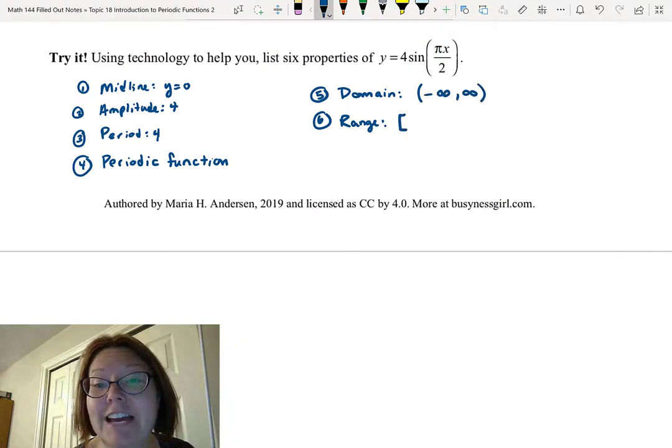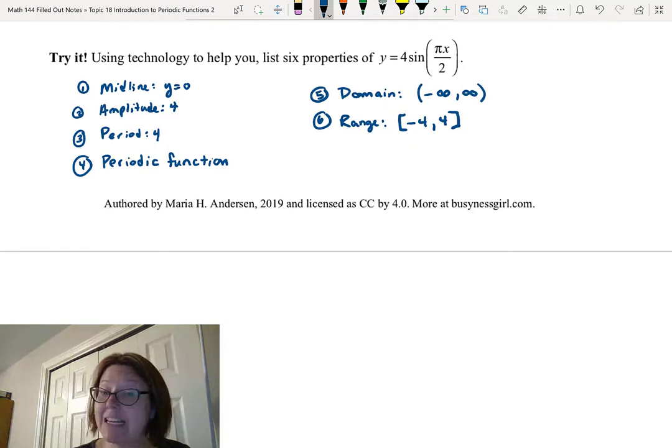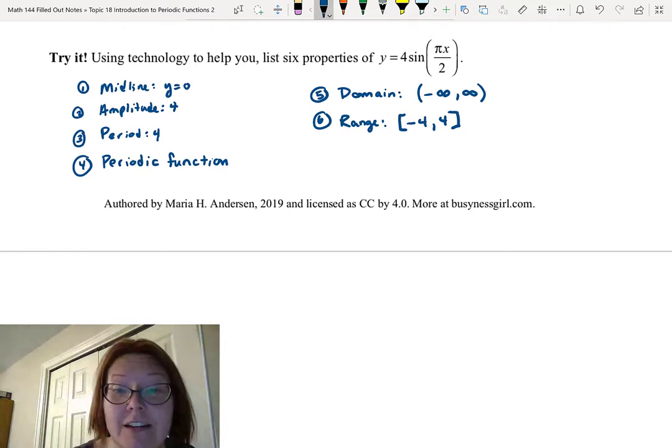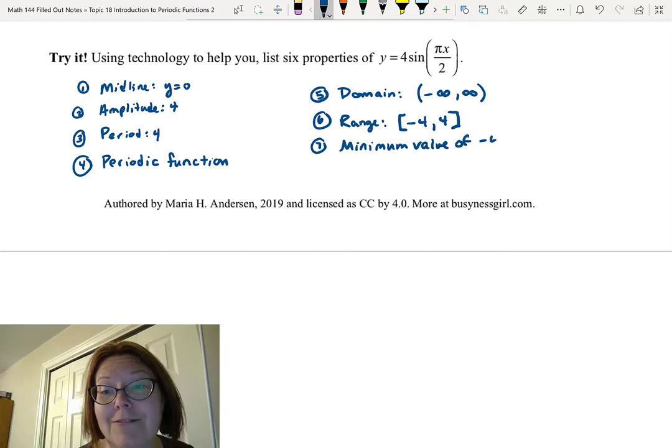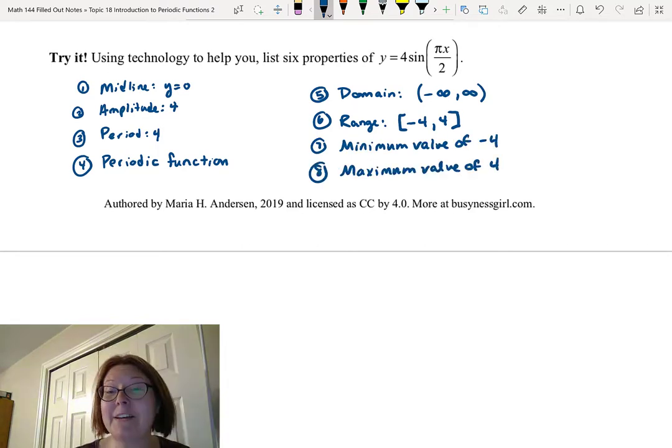And range is left bracket negative 4 comma 4 right bracket. Now other things we could talk about here would be a minimum value of negative 4 and a maximum value of positive 4. So there you go, eight properties of this function.